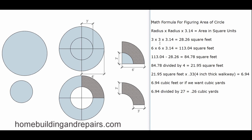Let's go ahead and multiply three times three — radius times radius times 3.14 — equals 28.26 square feet. This is not cubic feet; this is square feet. This would be the square feet for the smaller circle. The bigger circle, the six-foot radius, would be 113.04 square feet.